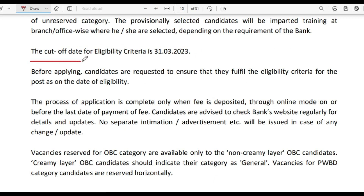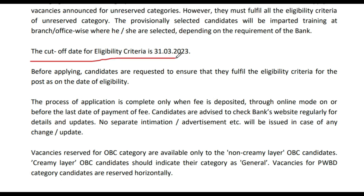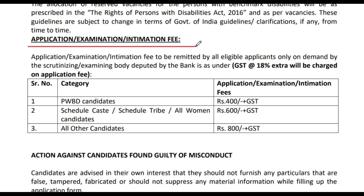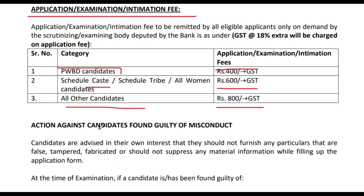Now I have told you about the application fee. For PWBD candidates, the application fee is ₹400 plus GST. For Scheduled Caste candidates, it is ₹600 plus GST. All other candidates will pay ₹800 plus GST.